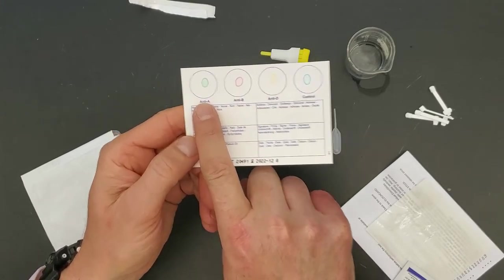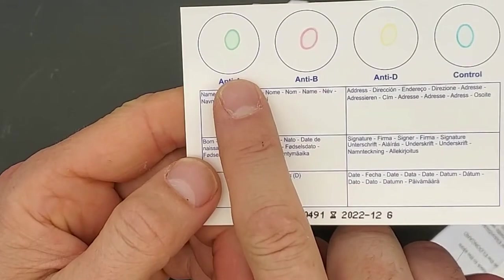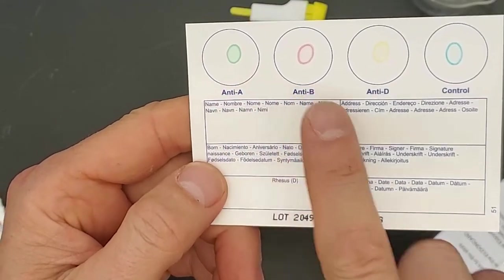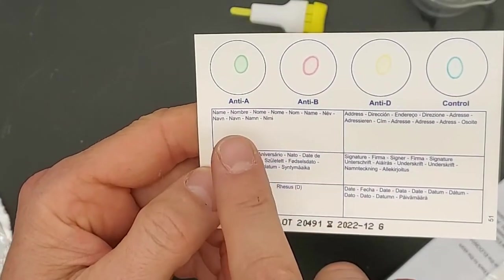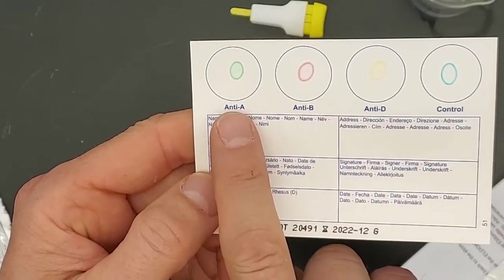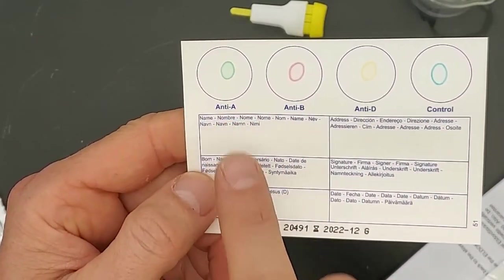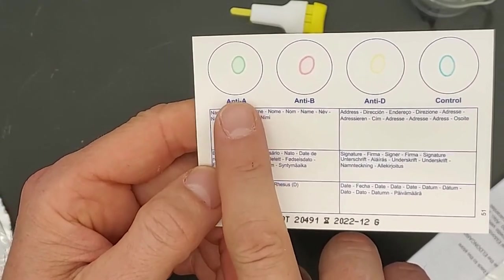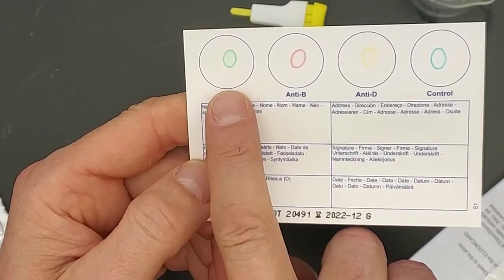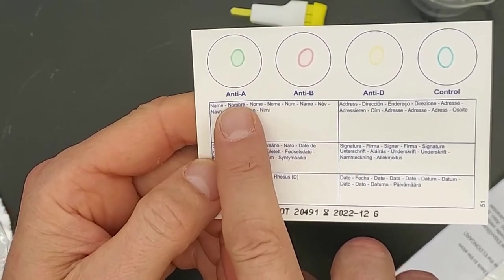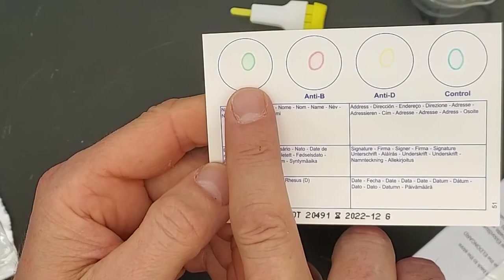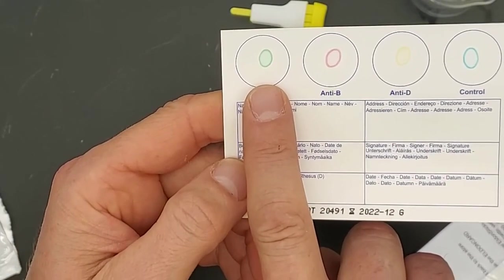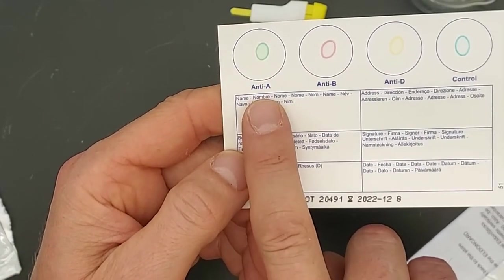You'll notice that in each circle there is a drop of dried substance. That dried substance, they're different colors. So at the factory I assume they know what they're dealing with, so they know that the cards are being set up correctly. In the anti-A circle, in that dried substance, there's some kind of solution with antibodies against A antigen.